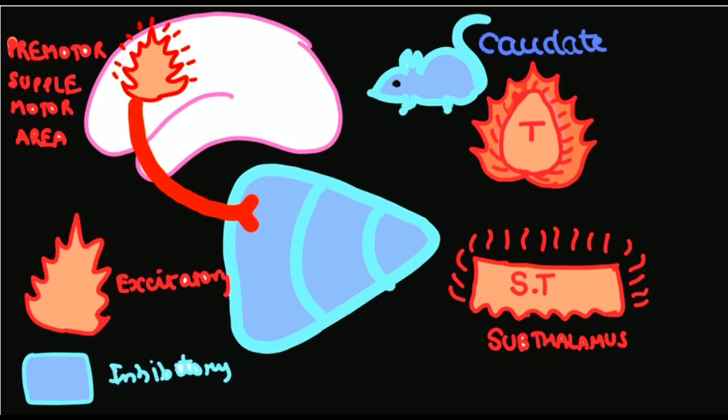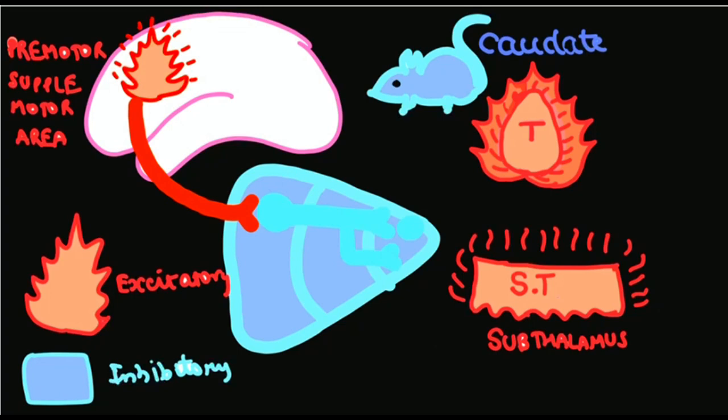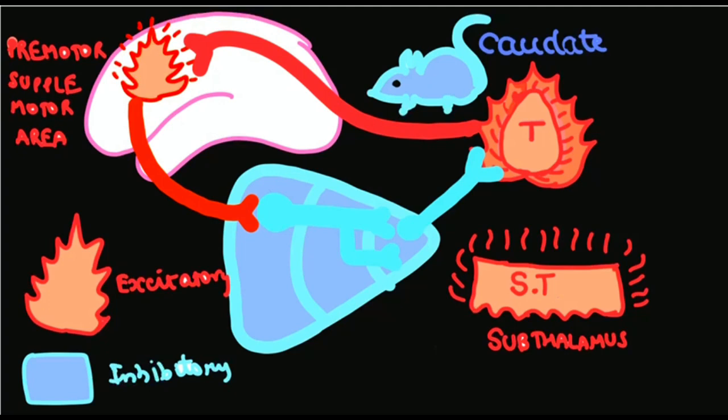pathway. This pathway comes from the cortex to the putamen, from putamen to the GP interna (globus pallidus interna), to the thalamus, from thalamus to the cortex again, activating the premotor areas to initiate a movement. When this pathway